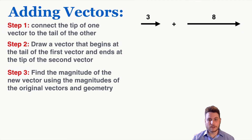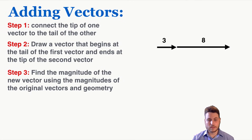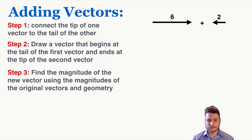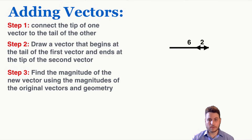If we have two vectors pointing in the same direction, we use the tip-to-tail method again — connect tip-to-tail, draw that new connecting vector from the beginning of the first to the end of the last, and using geometry it's obvious that the length is 11. If we have vectors pointing in opposite directions, we connect the tip of one to the tail of the other so that the 2 pushes back into the 6, and the final vector has a length of 6 minus 2, which equals 4.